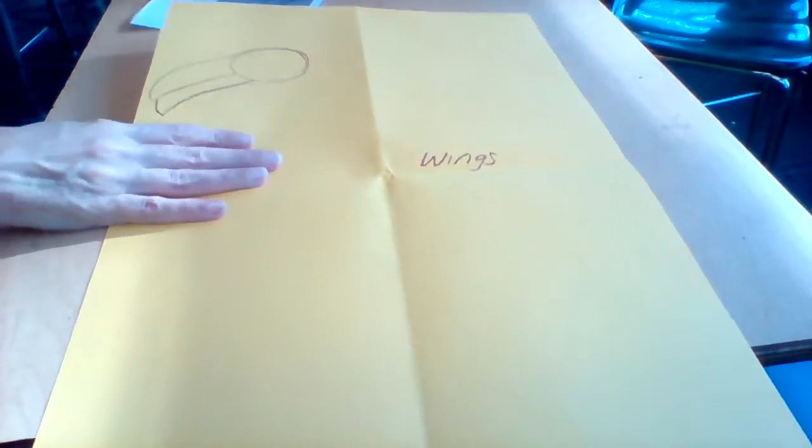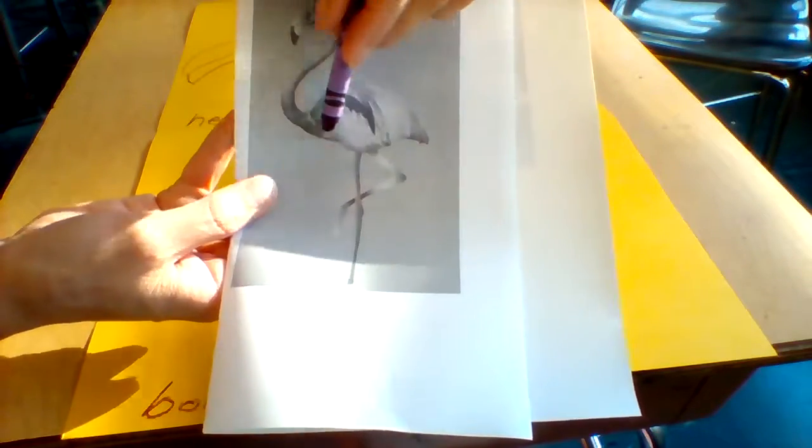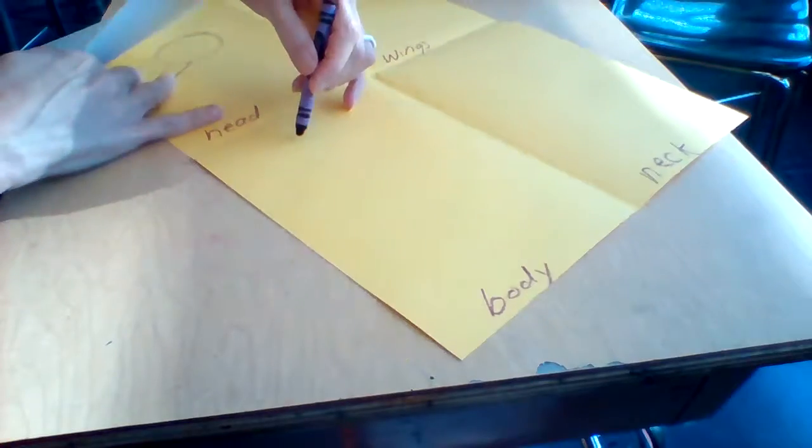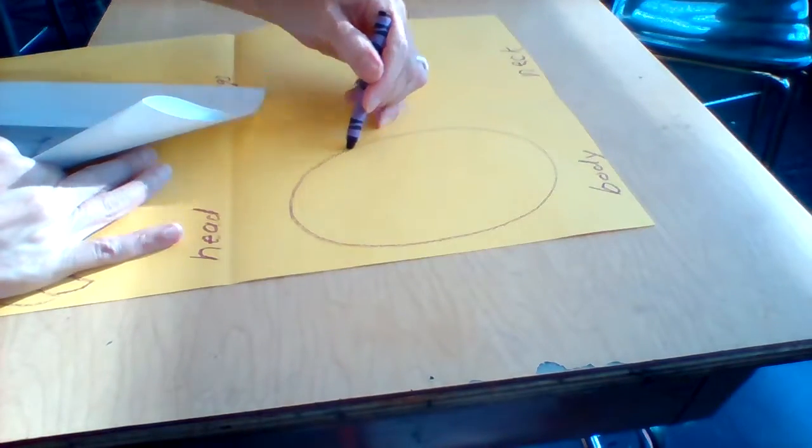Do you think you should color it in? Definitely not. Nope. Now I'm going to go down to the body. So what shape is this flamingo body? I have an oval and I'm going to make mine this way. My body's a little long.